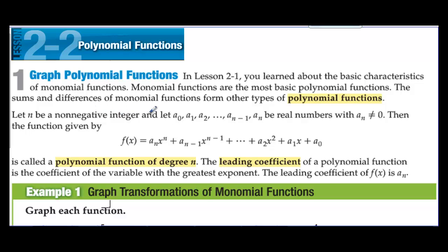Let n be a non-negative integer and let a₀, a₁, a₂, up to aₙ₋₁ and aₙ be real numbers with aₙ not equal to 0. Then the function given by f(x) = aₙxⁿ + aₙ₋₁xⁿ⁻¹ and so on, all the way down to the constant, is called the polynomial function of degree n. The leading coefficient of a polynomial function is the coefficient of the variable with the greatest exponent. The leading coefficient of f(x) is aₙ.